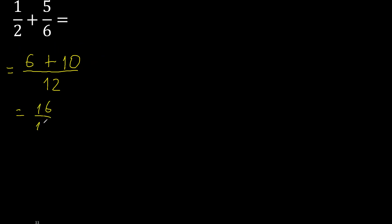16. 12 can be simplified because it can be divided by the same number — divided by 2. 16 divided by 2 is 8, 12 divided by 2 is 6. This can be divided by 2 again: giving 4 and 3.